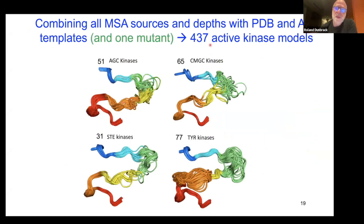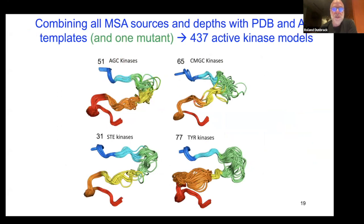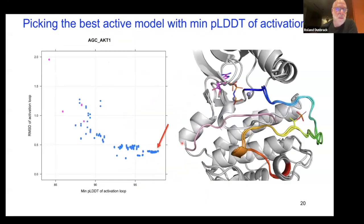We managed to get all 437 kinases active — requiring a mutation in one that may be a pseudokinase. Here are 51 AGC kinases all showing the upside-down boat shape, and similarly for CMGC kinases. Tyrosine kinases show quite diverse C-terminal activation loops. The best model for each kinase was selected by the minimum PLDDT across activation loop residues — the highest PLDDT structures correlate with the lowest RMSD to known structures.